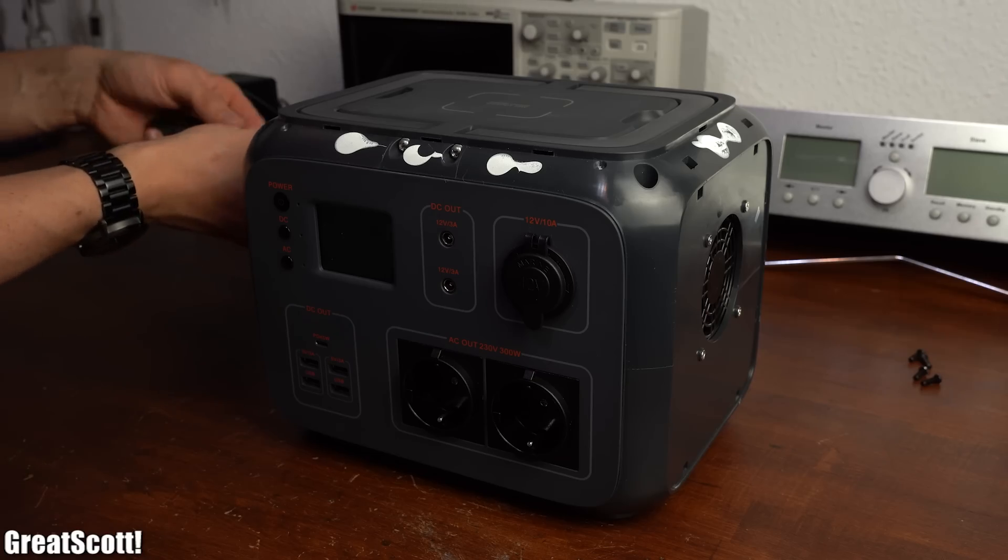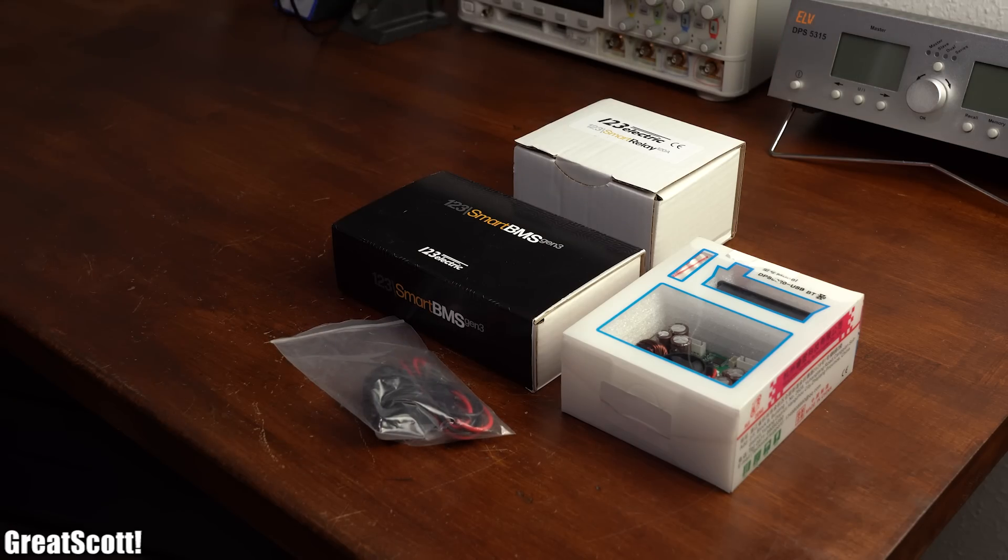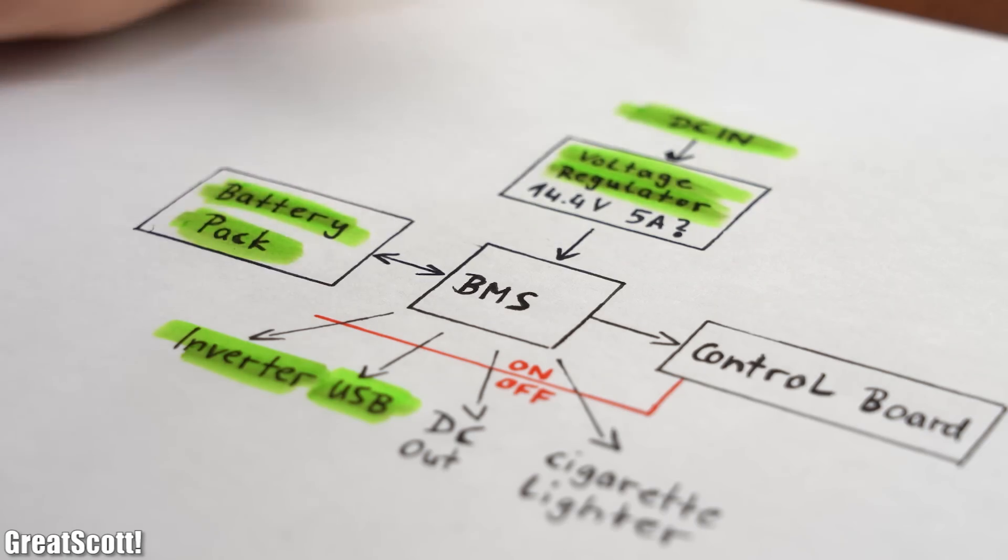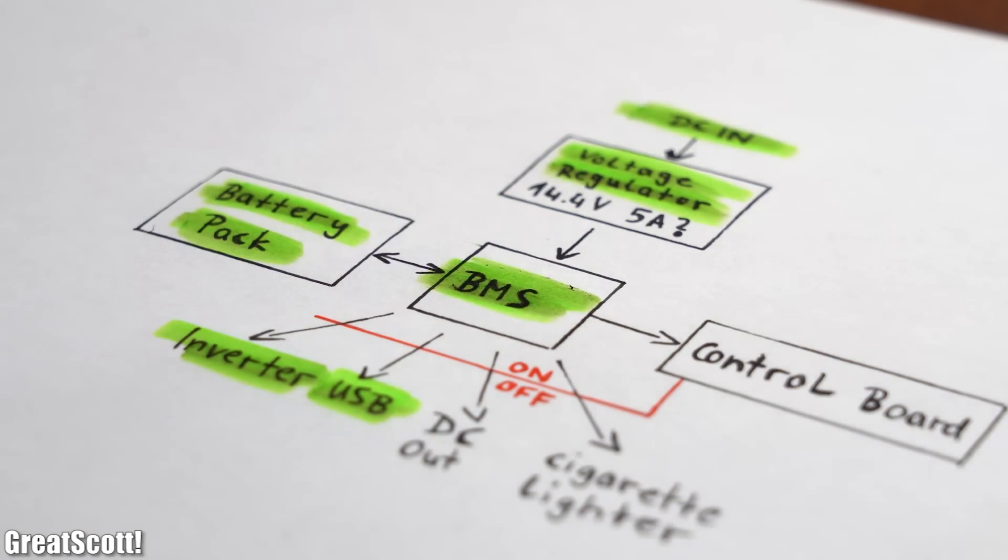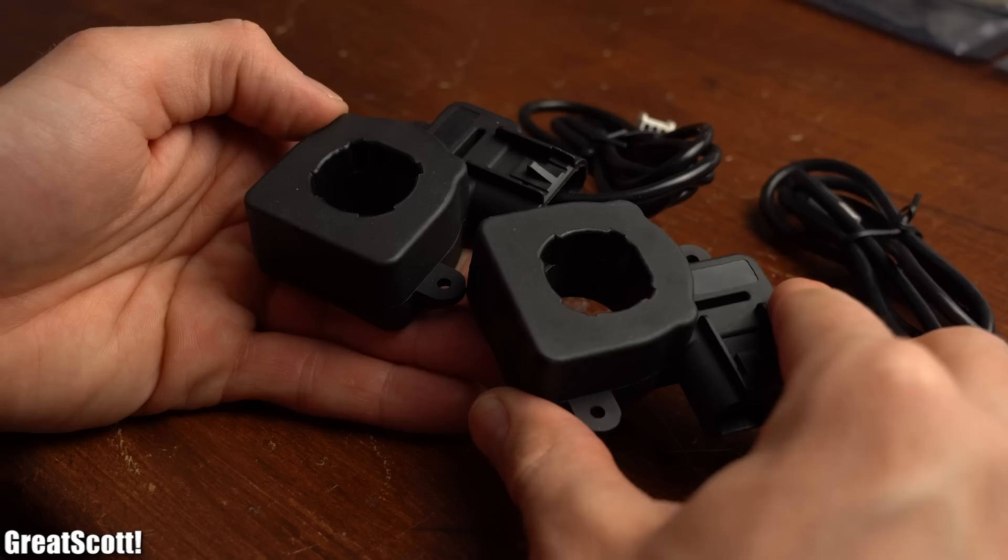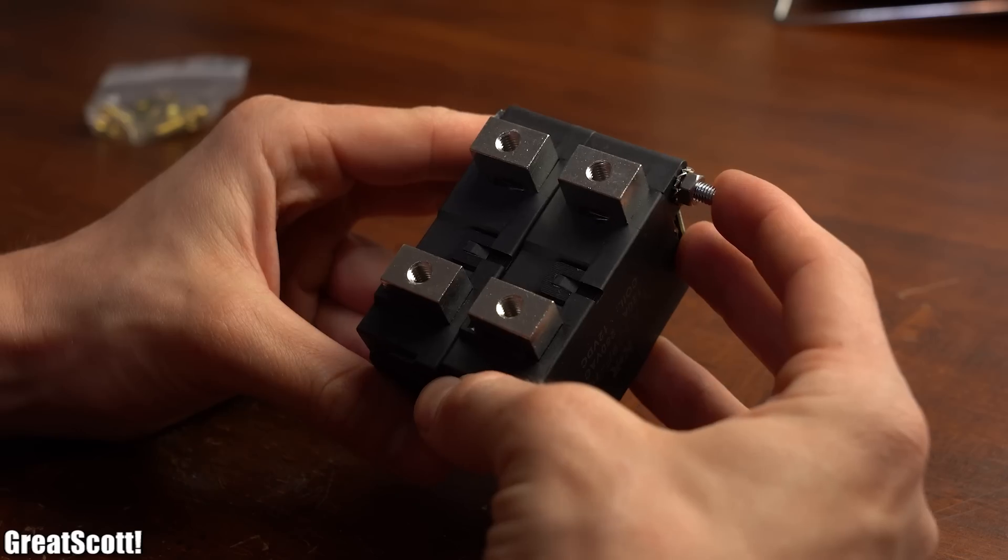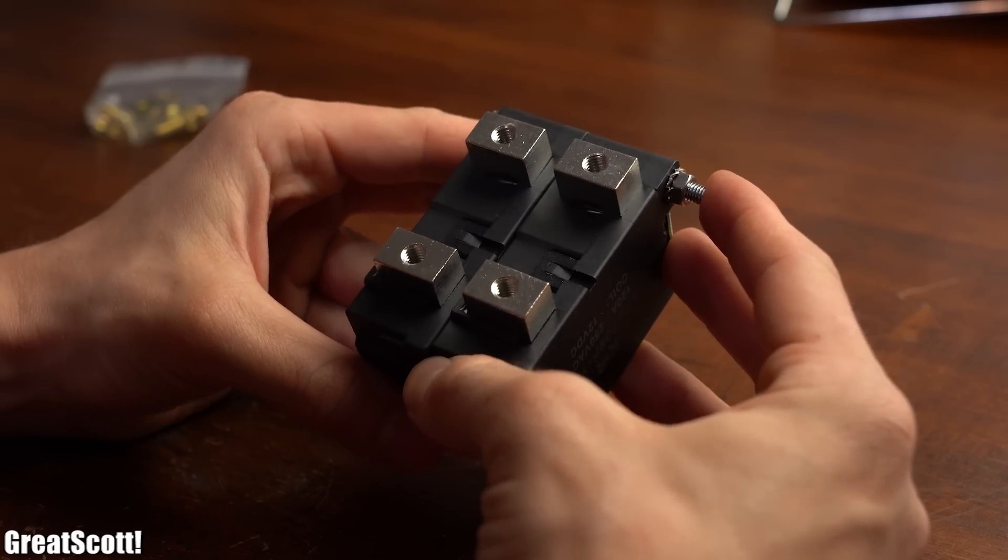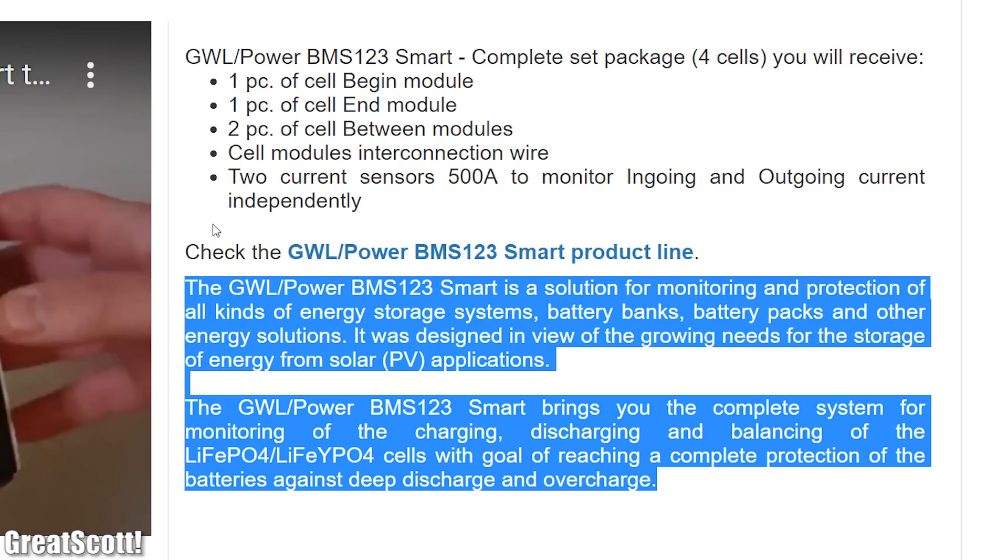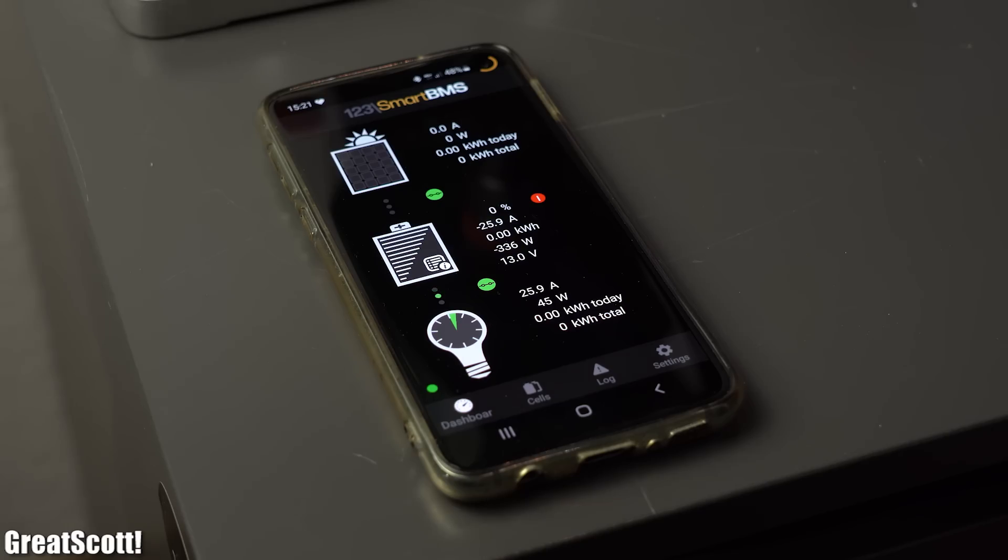Which is why I put the commercial power station back together and started gathering the main components for my own DIY version. According to what I prioritized from the commercial version. To start off I got myself such a smart BMS with two current sensors in combination with a smart relay. The BMS comes with all the protection features we need as well as a fitting smartphone app, which I will talk about later.